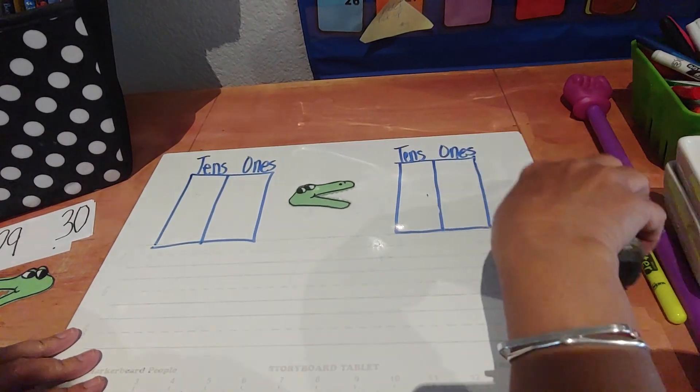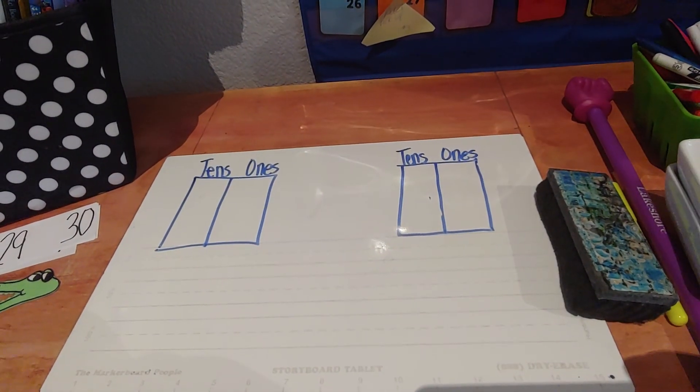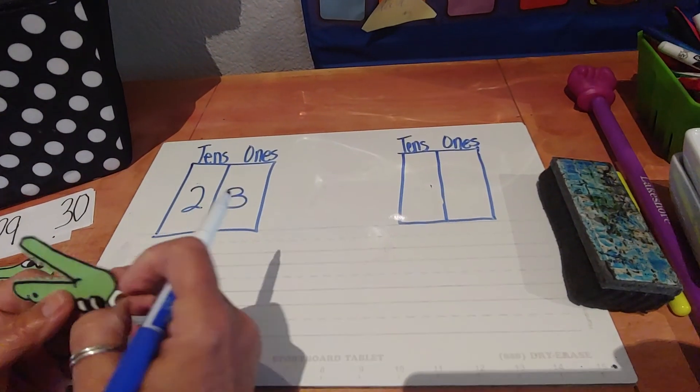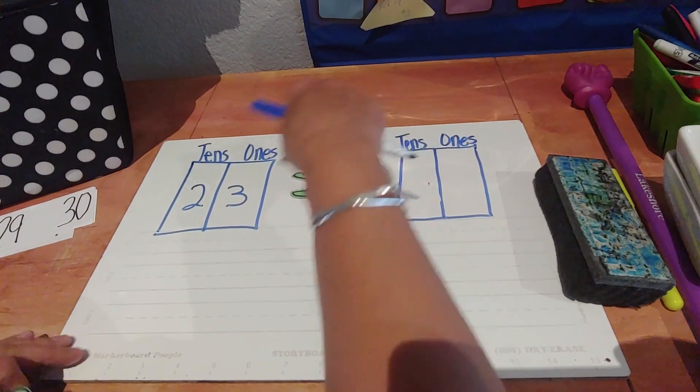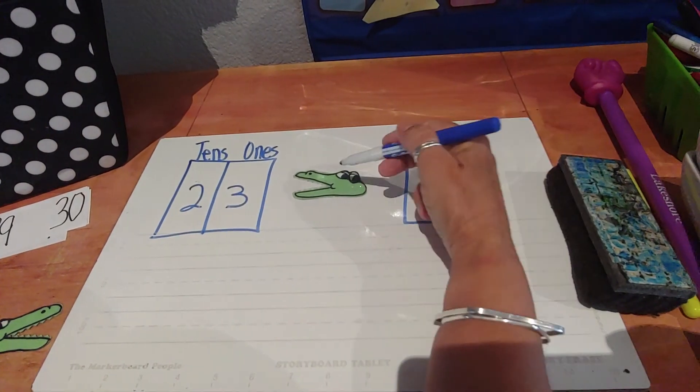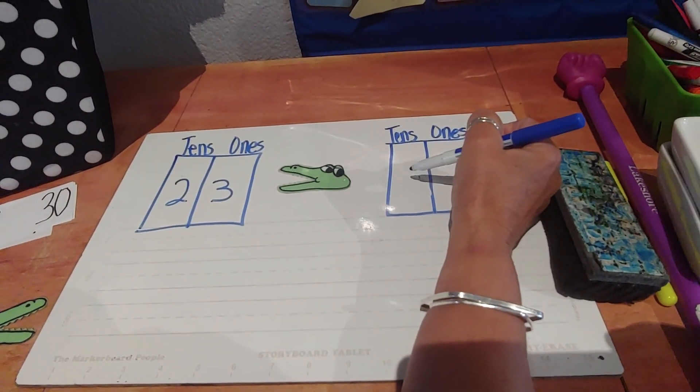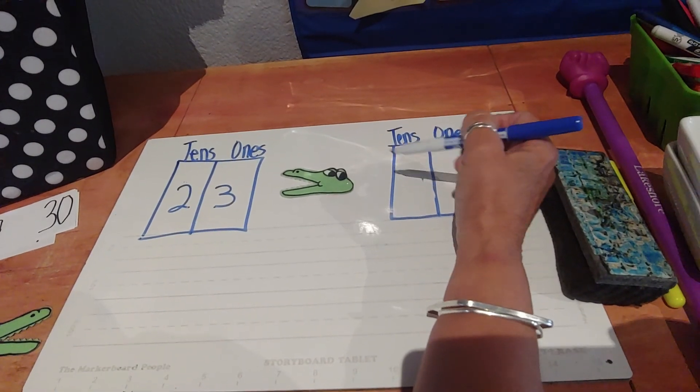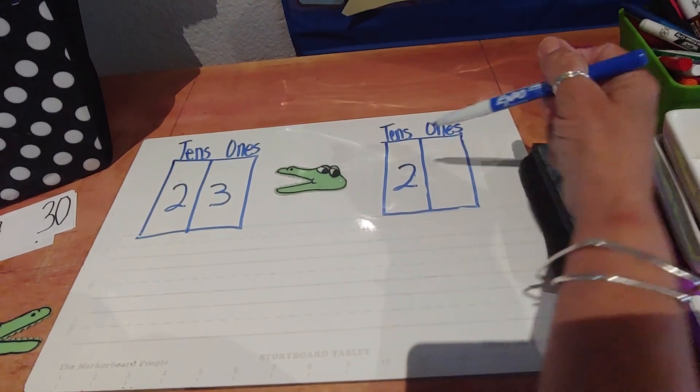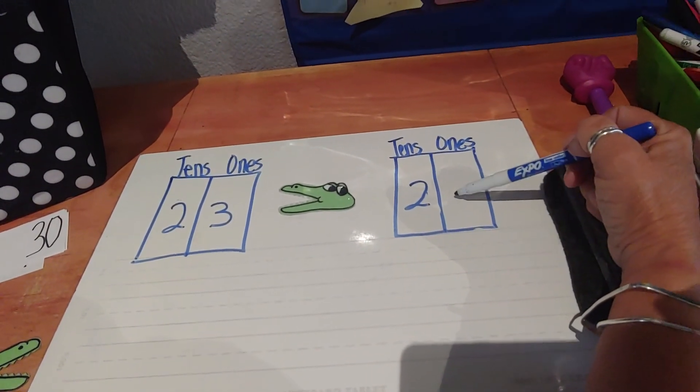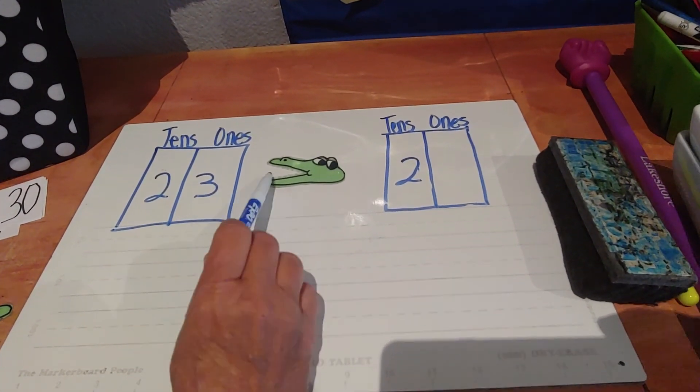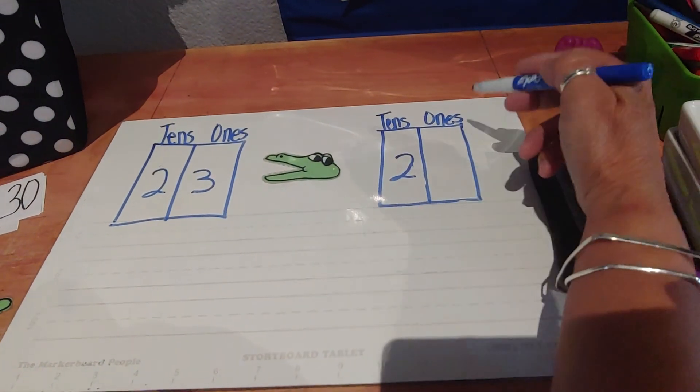And what they do here is they give you two tens and they give you three ones. They're saying that this number has to be greater than because the big mouth is bigger, greater than this side of the mouth, which is closer to this ten frame house or place value house. So we have 23 and then we have two tens here. And our job is to fill in the ones to make this statement true. So 23 is greater than 20. Yes.